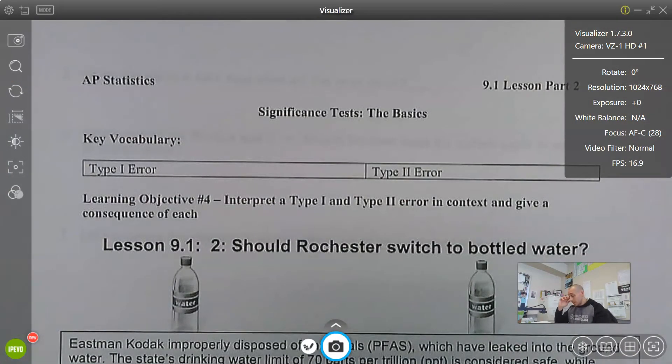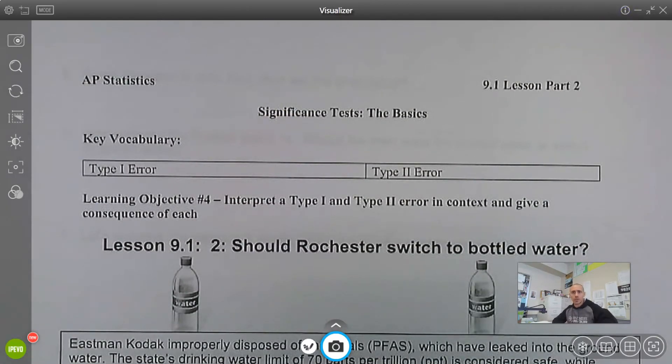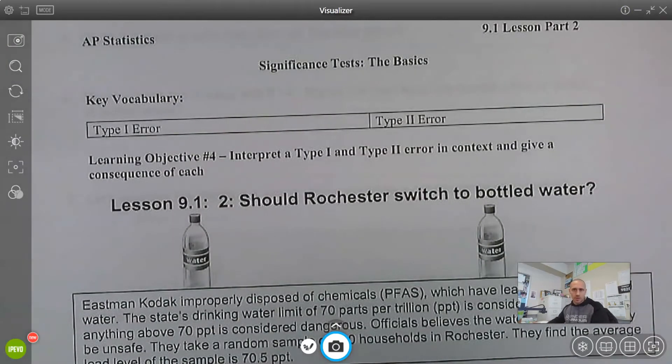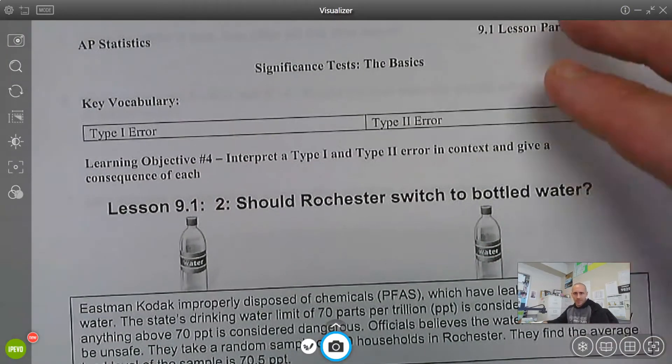Let's jump into the last part of this lesson, which is dealing with Type 1 and Type 2 errors. The learning objective is to interpret these errors in context and talk about consequences.